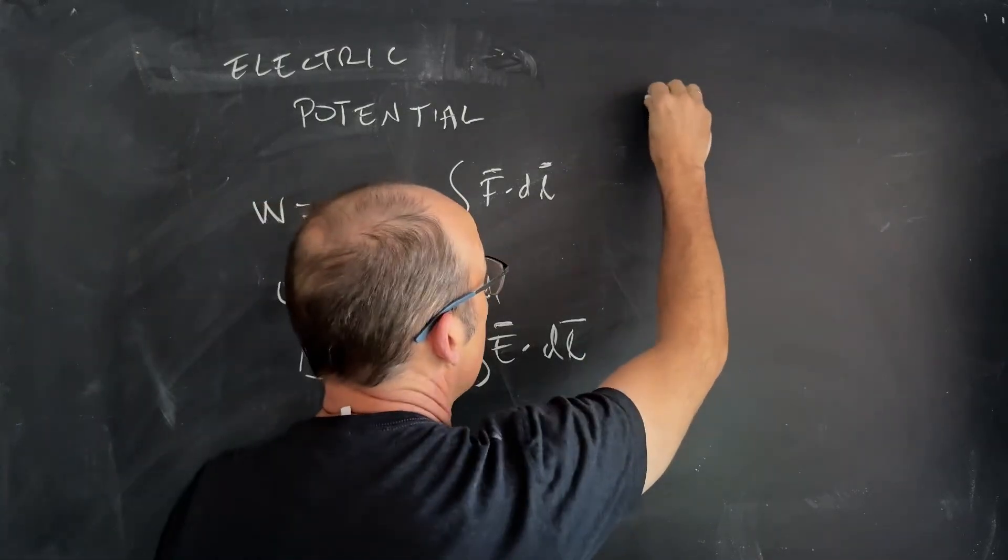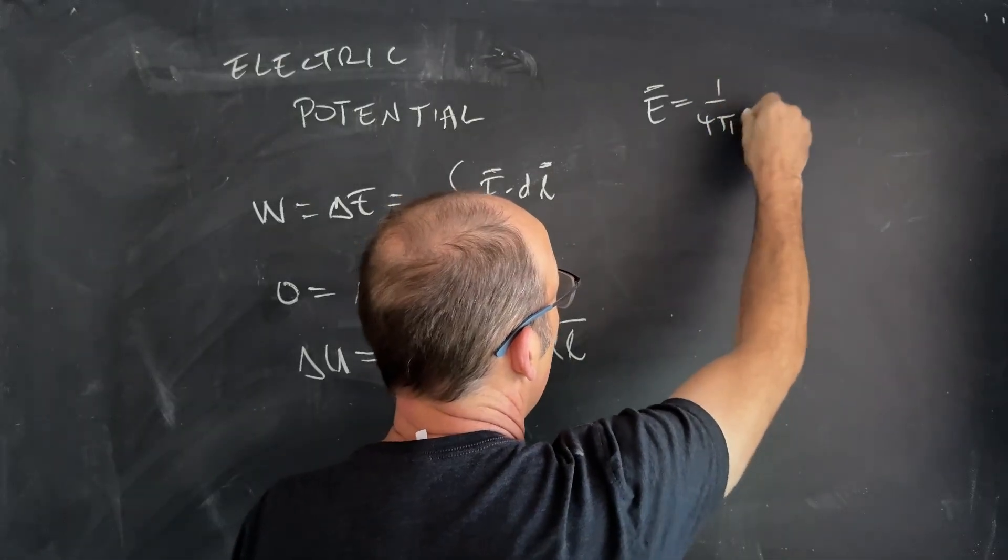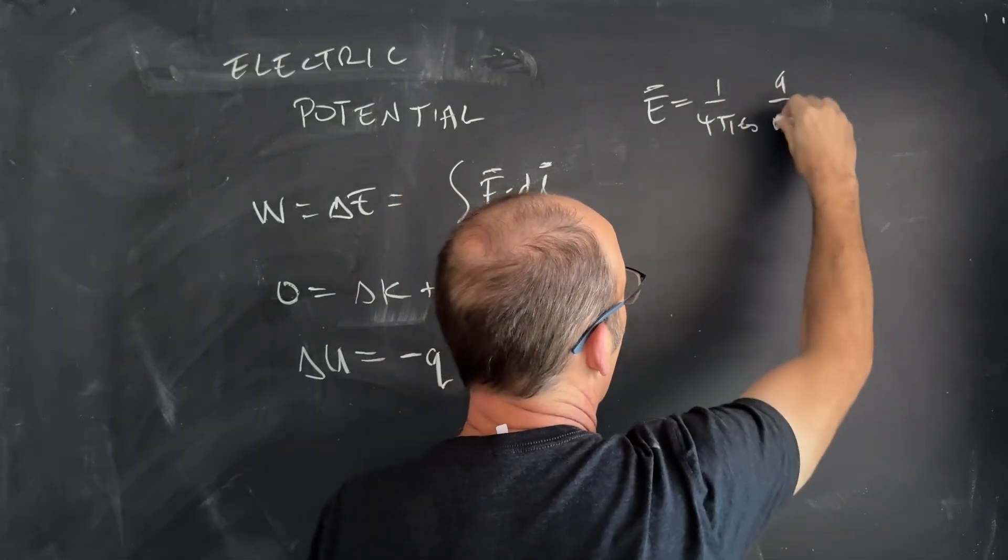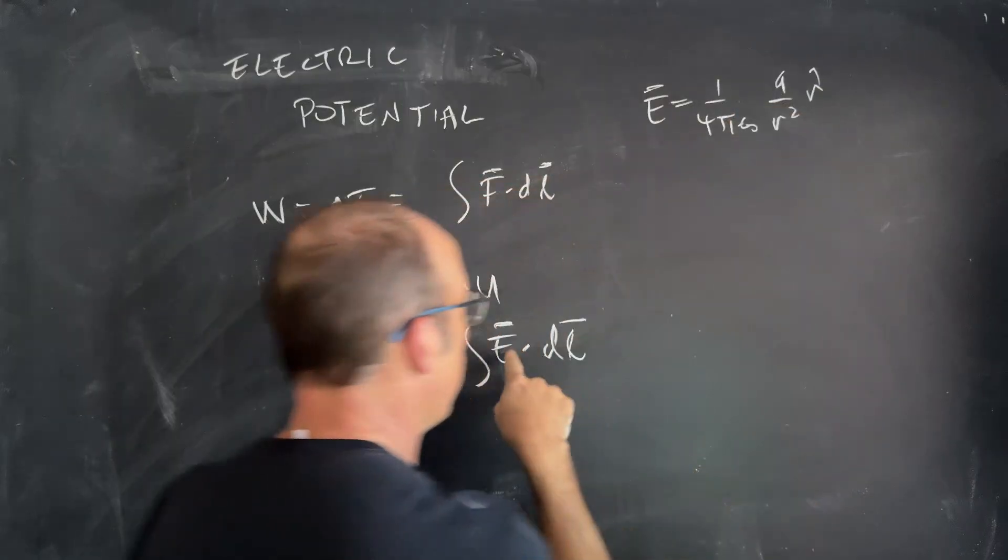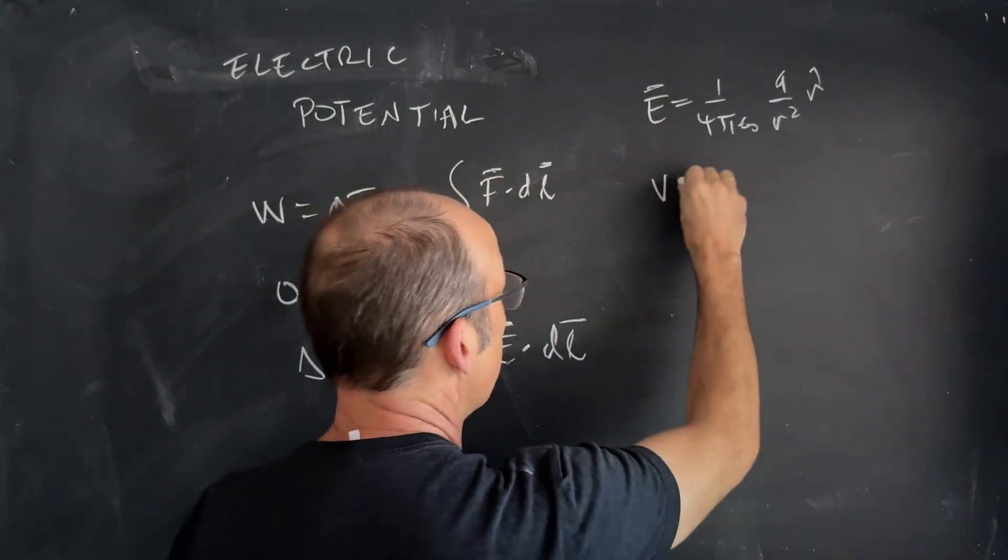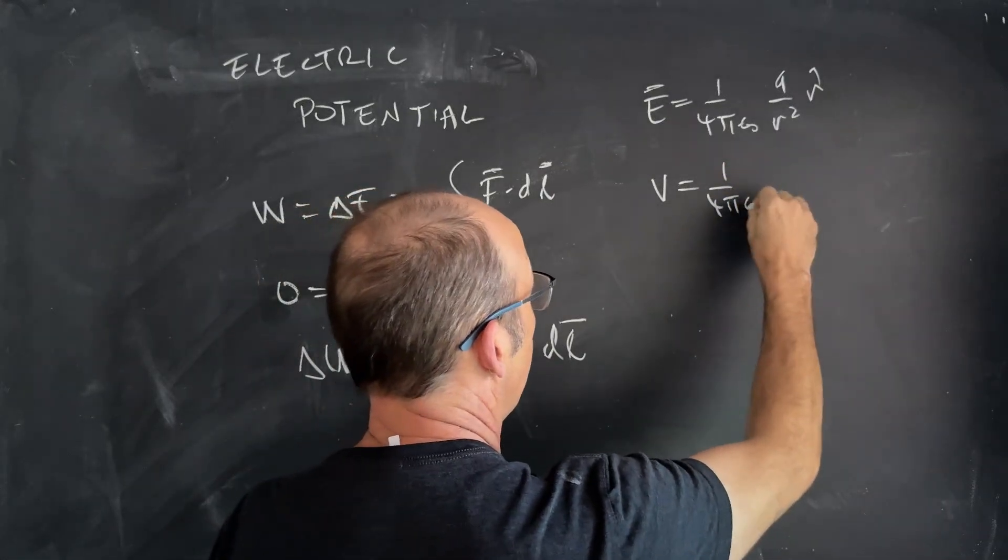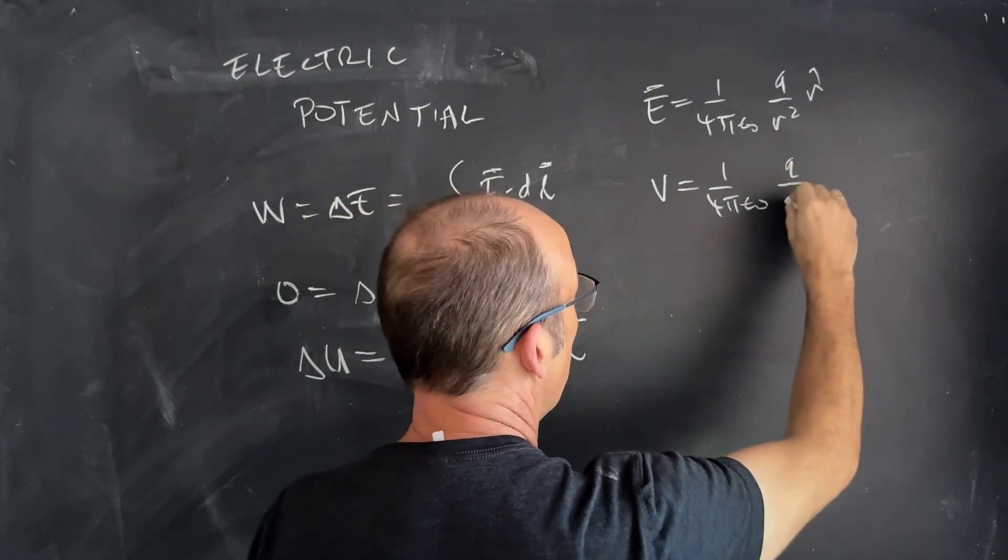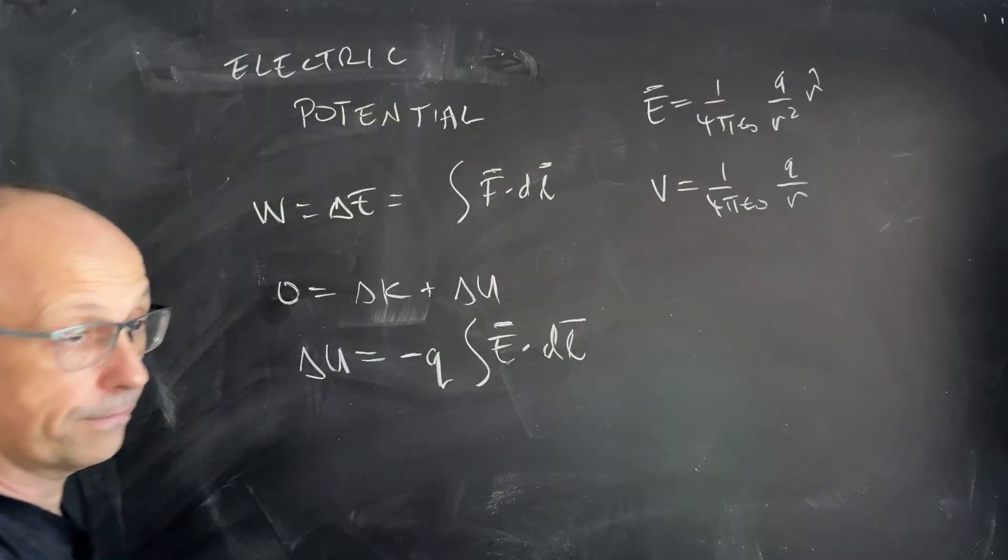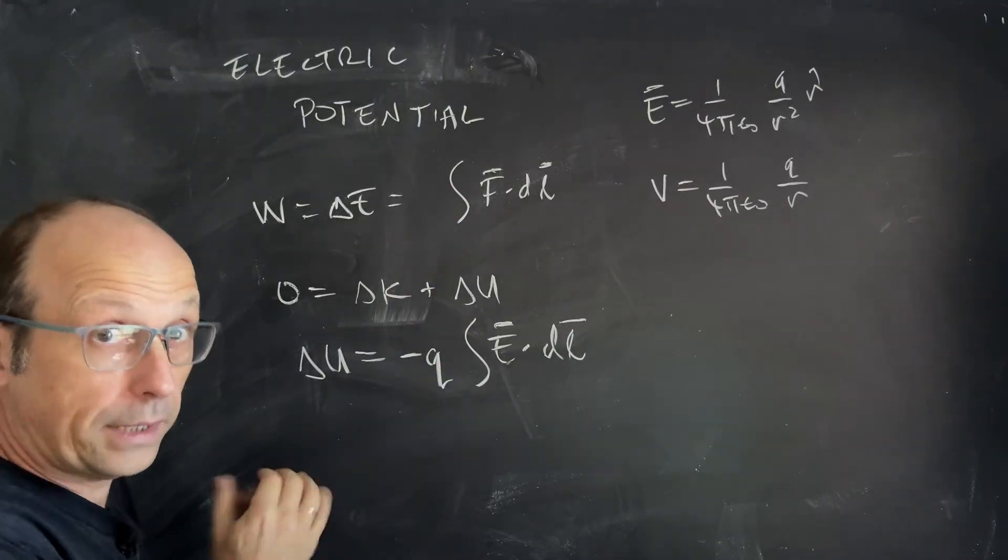With that, we said the electric field was 1 over 4 pi epsilon naught Q over R squared R hat and when you do the integral, we get V is 1 over 4 pi epsilon naught Q over R for a single point charge with respect to infinity. That's what we did.